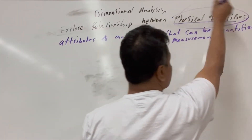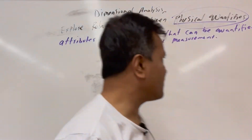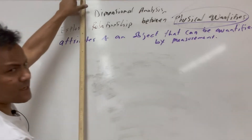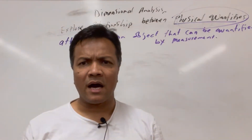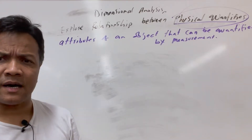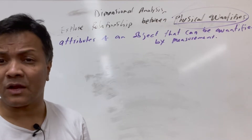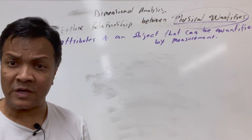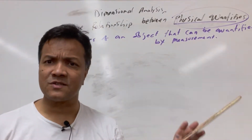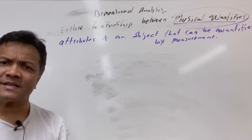Physical quantities come with units. For example, if I tell you the height of this board is 103, I'm not telling you anything. I have to be very specific whether it is 103 miles, 103 kilometers, 103 light years, 103 inches, or 103 centimeters. In this case, it is 103 centimeters — the height of this board. So, units are very important.